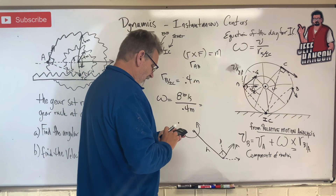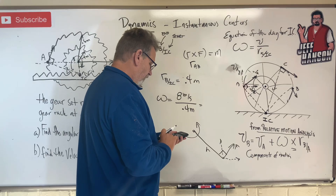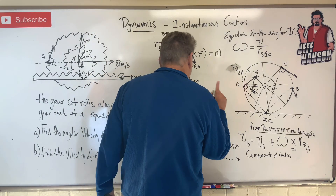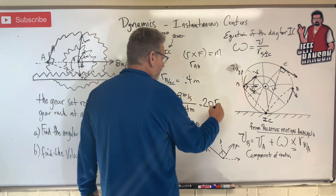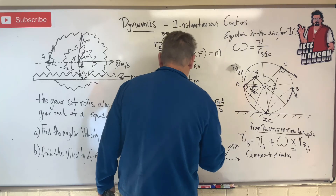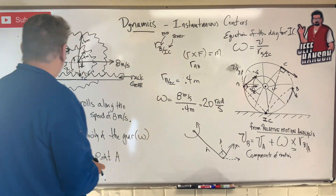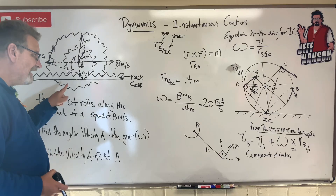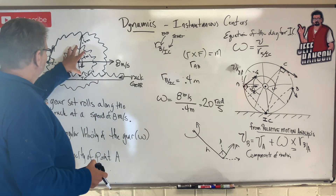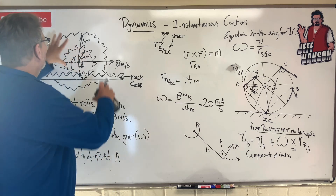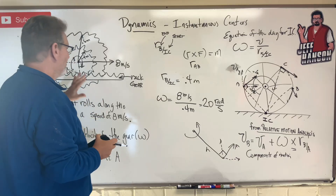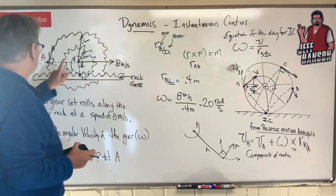Check it in your calculator: 8 divided by 0.4 equals 20. The meters cancel out, leaving radians per second. The angular velocity of the gear is 20 radians per second. And since both gears are tied together, this gear is 20 rad/s and that gear is 20 rad/s.